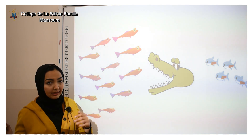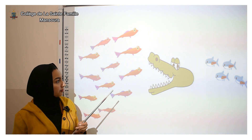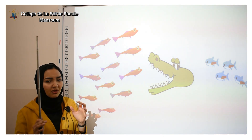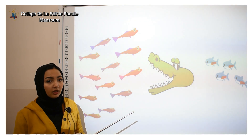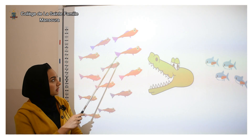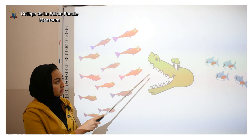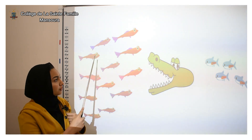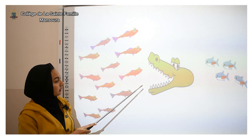Mr. Alligator is hungry and when he is hungry he always wants to eat more. So would he like to eat the group of twelve fish or the group of only four fish? Yes — because he is hungry he always wants more, so he will eat the group of twelve fish. Can you see his mouth? His mouth faces the group of twelve fish, the greater group.